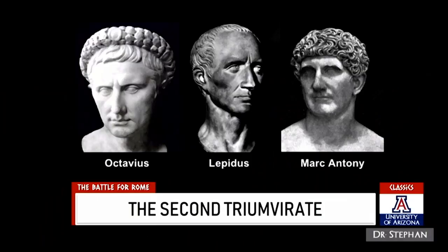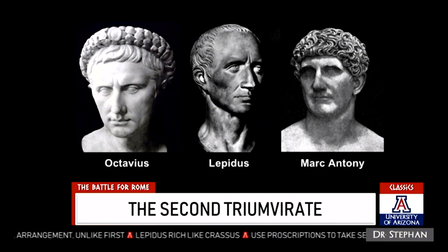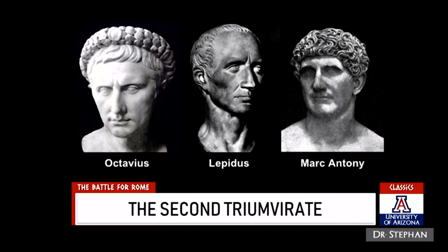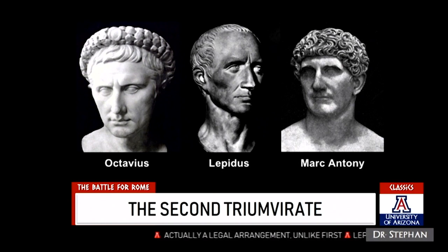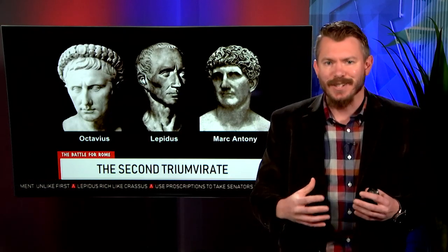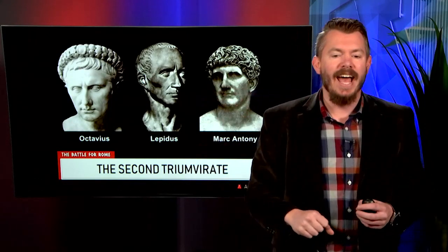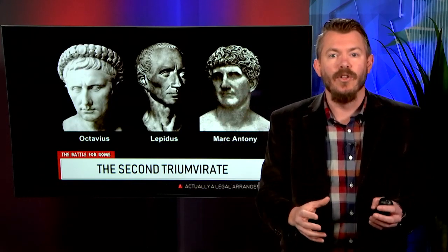Let's take a look at the revenge tour. The Senate had believed they could use Octavian against Mark Antony, but the opposite happens. Octavian gets together with Mark Antony, and then together with a third man, Lepidus — who is kind of the Crassus of this group — they form what we call the Second Triumvirate. Unlike the first triumvirate, which was an unofficial group of friends, this is actually a legal arrangement. They bond together legally and are going to try to take control of the Roman world.